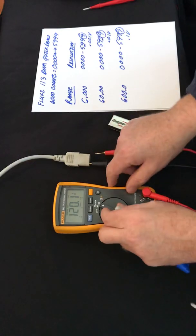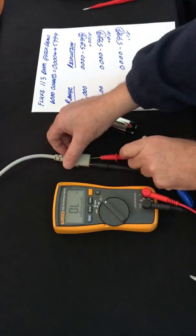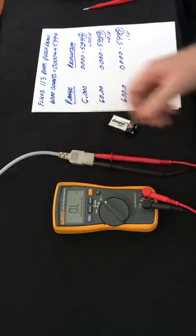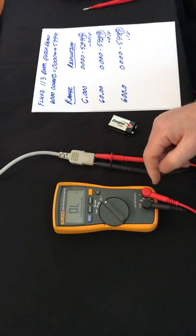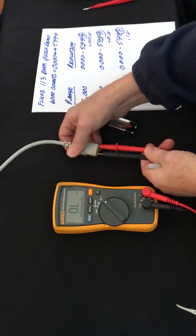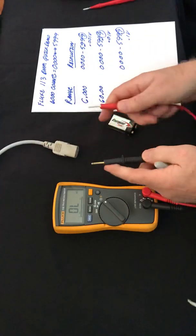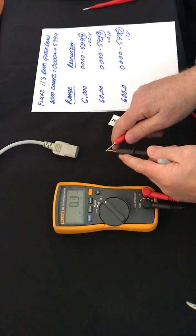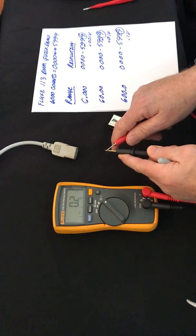It also has the ohms mode. What's nice about Fluke multimeters is they're all protected to the full extent of the multimeter. So I can put 600 volts in while I'm in the ohms mode and I'm not going to damage or do anything that's going to harm me. This is a feature that is not present in a lot of multimeters.